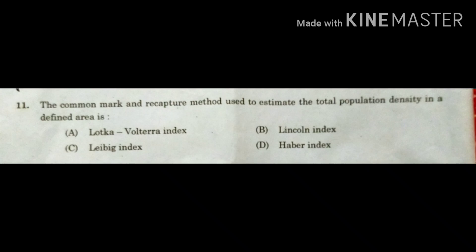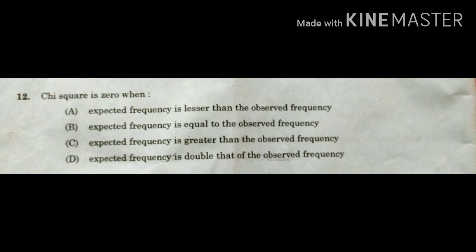The fourth option is the Haber index. The Haber index is related to the Haber process, which is an artificial nitrogen-fixing process in which nitrogen is fixed in the form of ammonia — also known as the Haber-Bosch process. From this analysis of all options, the correct answer is the Lincoln index, which is widely used to estimate population density in a particular area by the mark and recapture method.